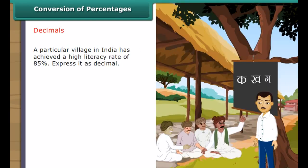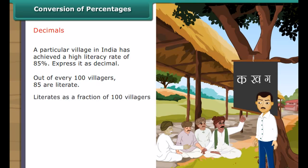Decimals. A particular village in India has achieved a high literacy rate of 85%. Express it as a decimal. Out of every 100, 85 are literate. Literates as a fraction equals 85/100, which equals 0.85. Therefore, 85% expressed as a decimal is 0.85.